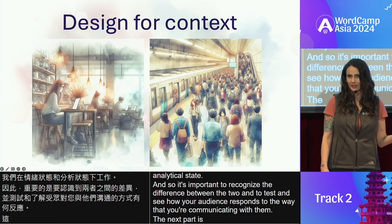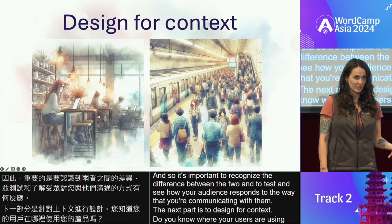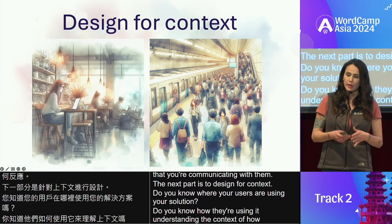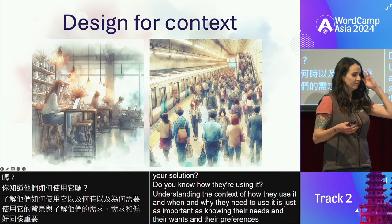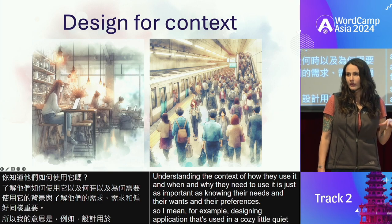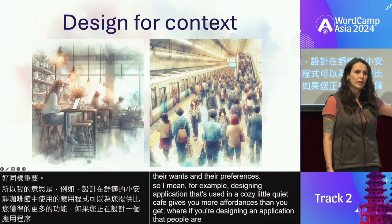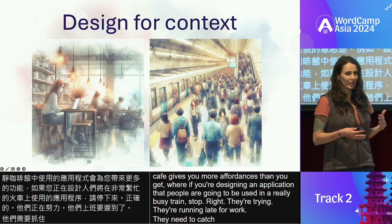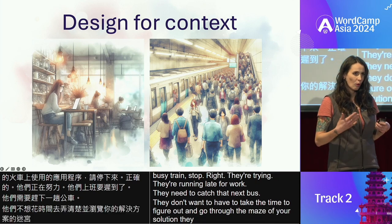The next part is to design for context. Do you know where and how your users are using your solution? Understanding context — when and why they need to use it — is just as important as knowing their needs and preferences. Designing an app used in a quiet café gives you more affordances than designing one people use at a busy train stop. If they're running late for work and need to catch a bus, they don't want to navigate a maze — they want information where they need it.